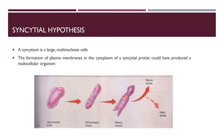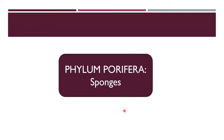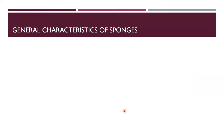In the syncytial hypothesis diagram, we can see that plasma membrane formation separates the cytoplasm into cells that are still attached to one another — representing the origin of multicellularity. Now we discuss our first phylum, phylum Porifera, whose examples are sponges.